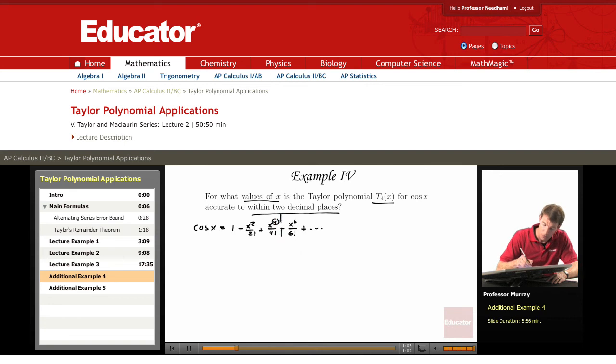There it is. And you cut it off right there. So T4 of x is 1 minus x squared over 2 factorial plus x fourth over 4 factorial.